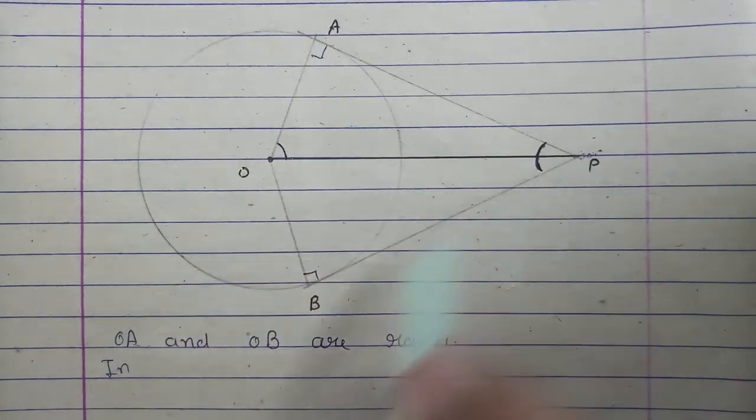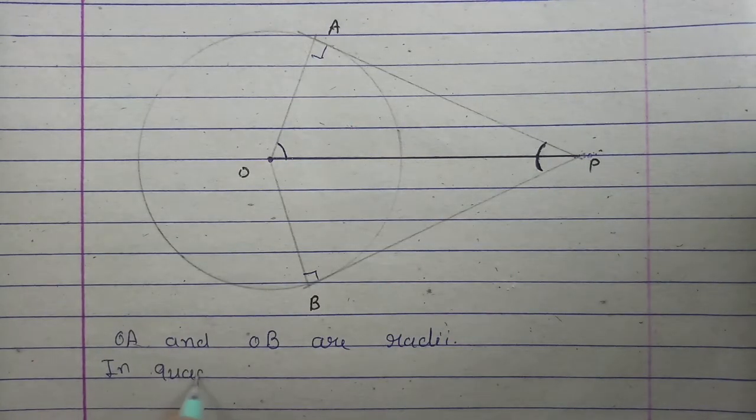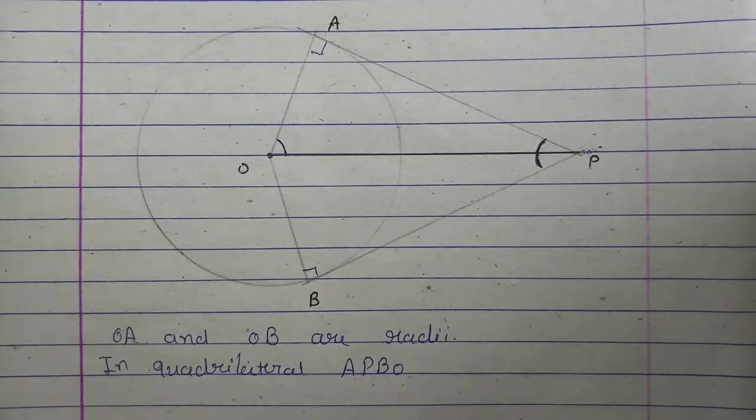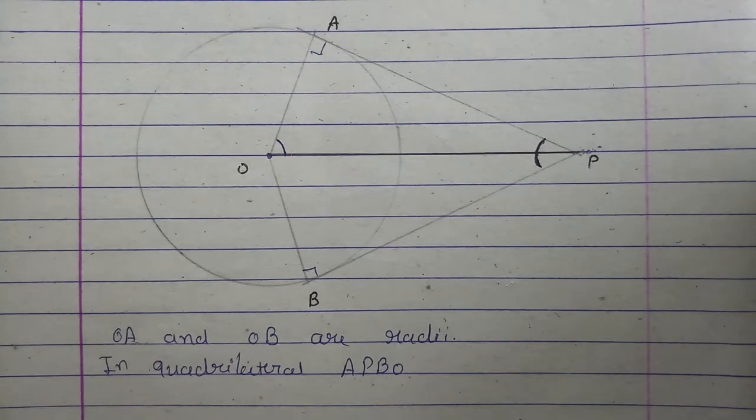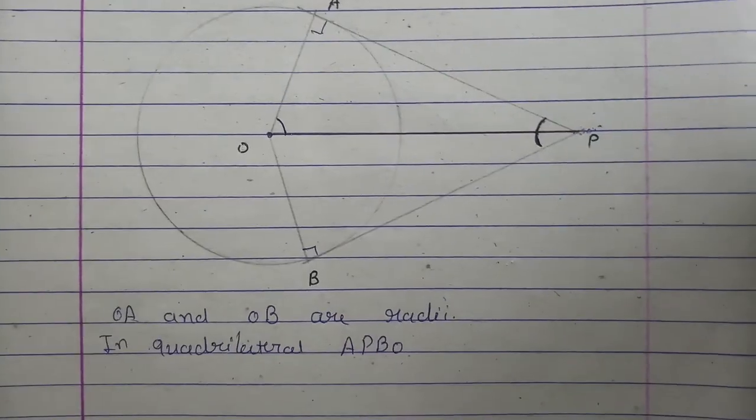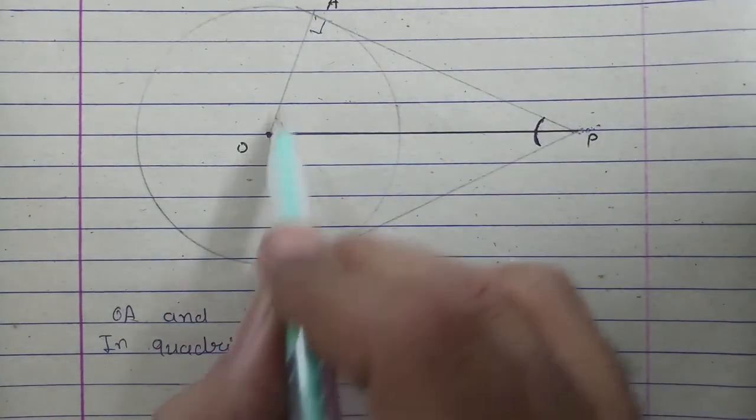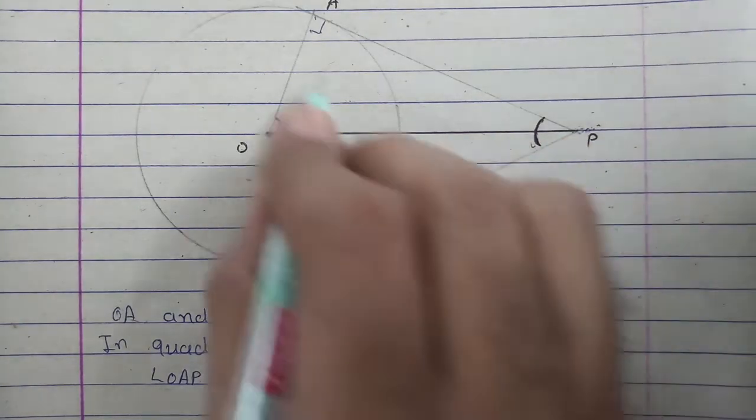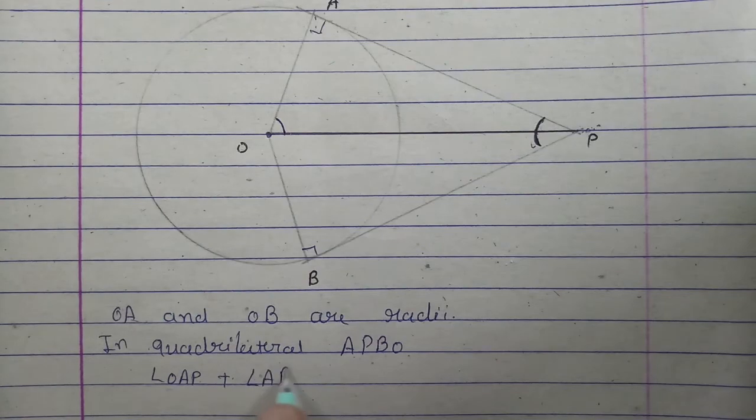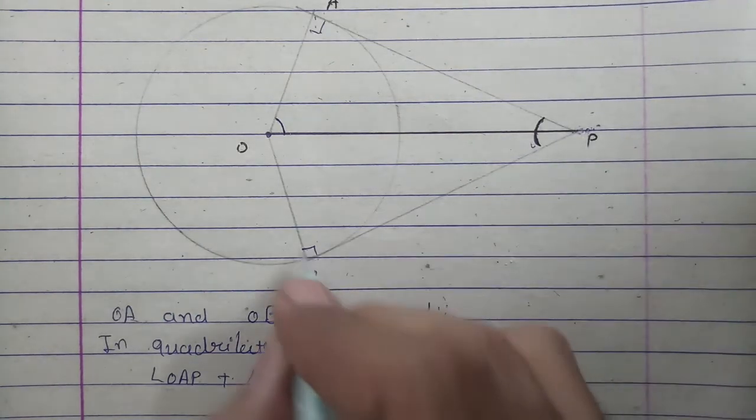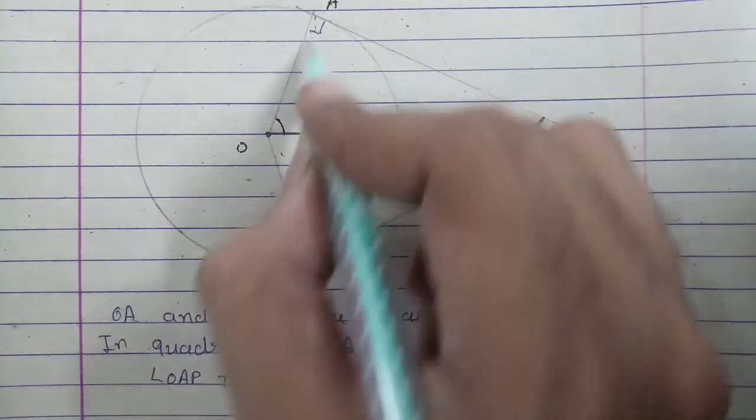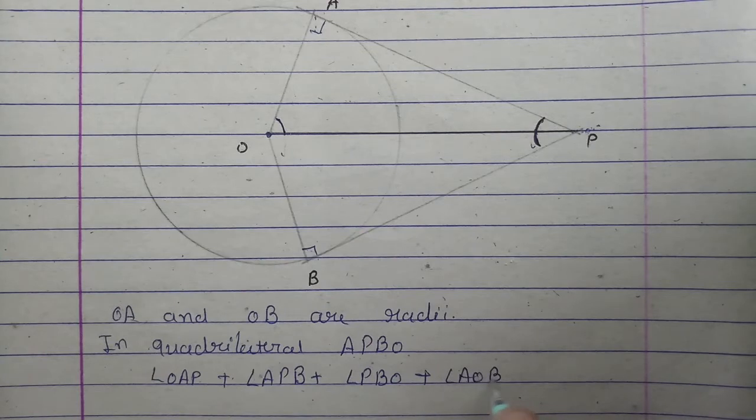We can see quadrilateral APBO. In quadrilateral APBO, the sum of all four angles will be 360. So angle OAP plus angle APB plus angle PBO plus angle AOB, the sum of all four will give us 360.